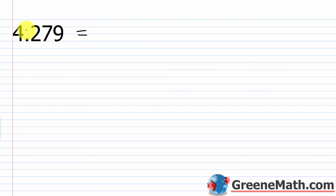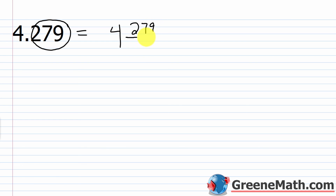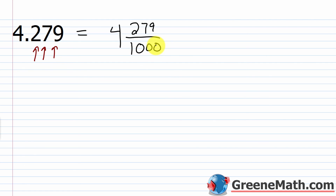For the last one, 4.279, I write the whole number 4 first. For the fraction part, I take 279 — the part after the decimal — and put that in the numerator. I put a 1 in the denominator and count: one, two, three decimal places, so three zeros. That gives us 4 and 279 over 1,000.